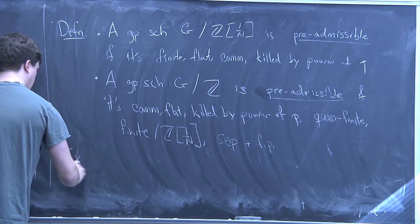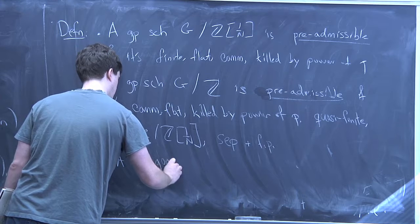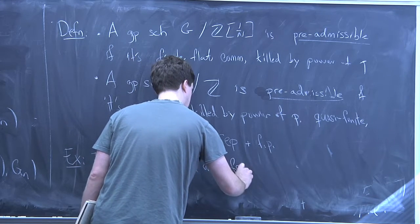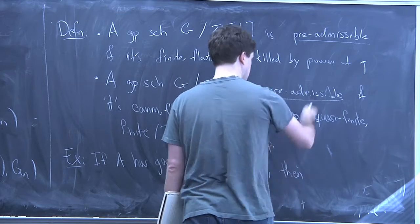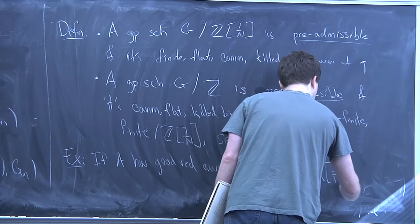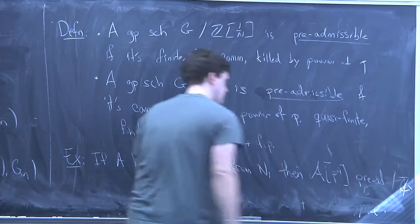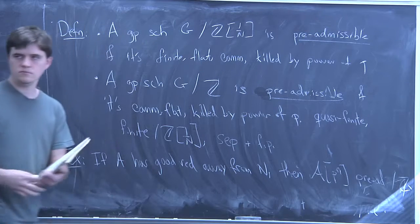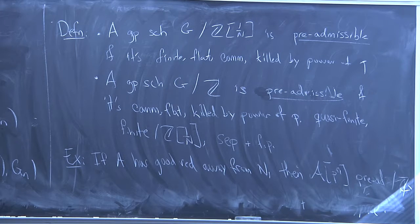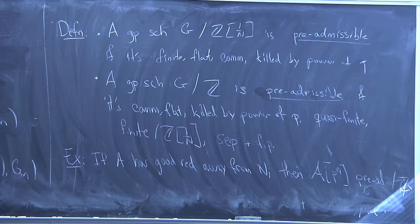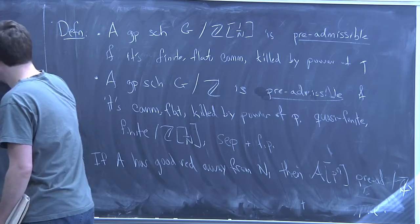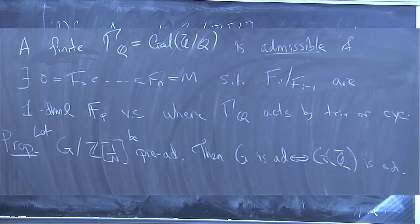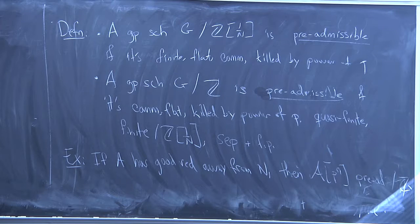The basic example to keep in mind: if A is an abelian variety with good reduction away from N, then the P^n-torsion of the Néron model is pre-admissible. The P^n-torsion is a nice finite flat thing, and at N you don't get finiteness because the Néron model isn't proper there, but it's still quasi-finite. Everything that shows up will be pre-admissible.